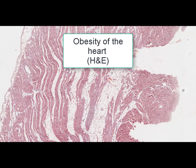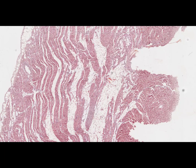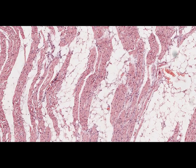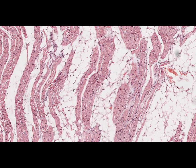On this slide we can see a part of the heart, exactly the myocardium. The stain is hematoxylin and eosin, and the name of this slide is obesity of the heart. Obesity of the heart is a stromal-vascular or extracellular mesenchymal fatty degeneration. General obesity is characterized by excessive fatty accumulation in the form of adipose tissue in the subcutaneous layer of the skin as well as in the stroma of different organs. At high magnification, we can see bundles of cardiomyocytes with nuclei, cytoplasm, and striation.